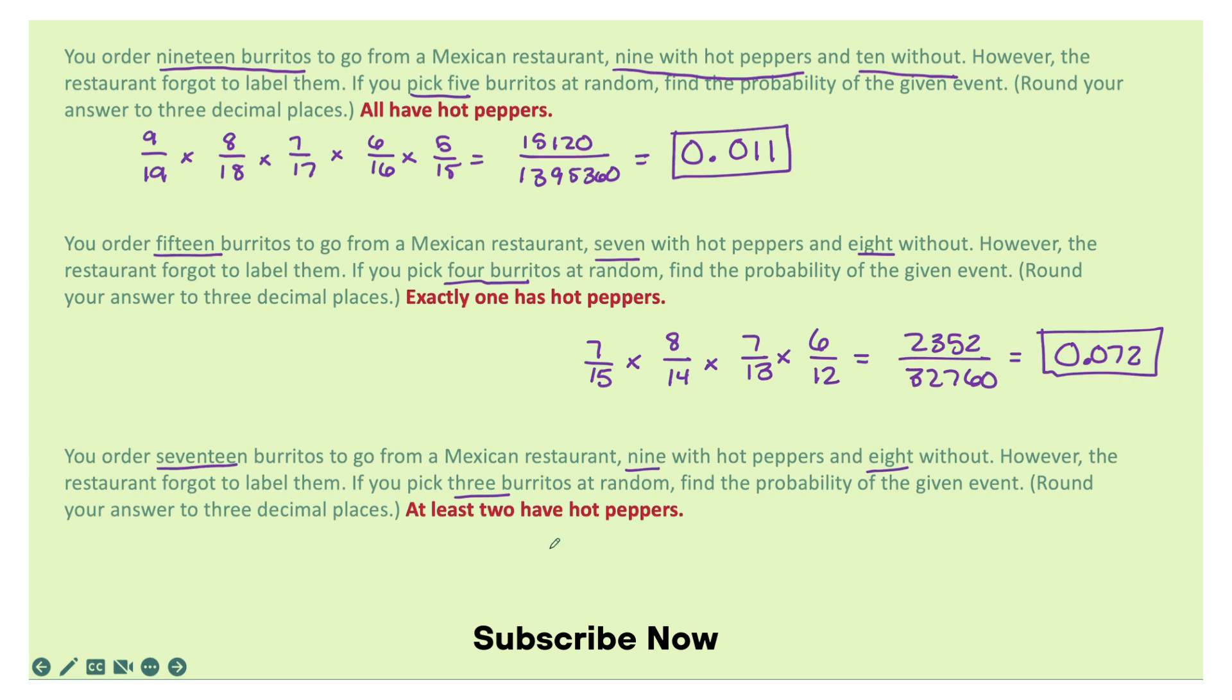So for this one, at least 2 have to have hot peppers. There's 9 out of 17 with hot peppers. Then when you're grabbing another one, now there's 8 left out of 16. And now it doesn't really matter what the third one has, because you just need at least 2 with hot peppers. So you could multiply by 15 over 15 or by 1.